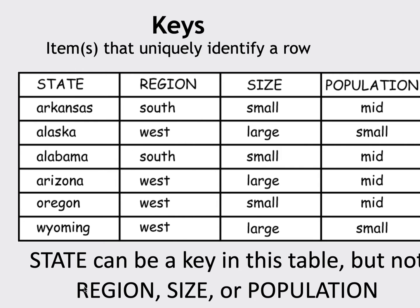For keys, consider a states table: state can be a key because there's a unique ID for each state. But region, size, or population can't be keys. If I know it's Arkansas, I know it's in the southern region. But if I know it's in the southern region, I can't tell if the size is small or large — I have 'west large' and 'west small'. So size isn't functionally dependent on region, and population isn't functionally dependent on region either. All the other items aren't functionally dependent on those columns, so they don't make proper keys.